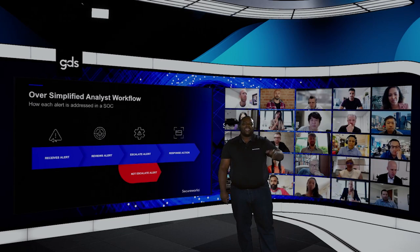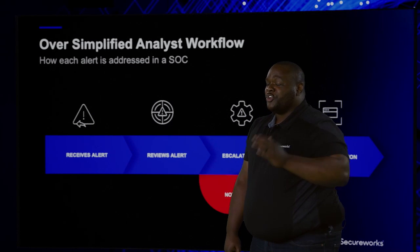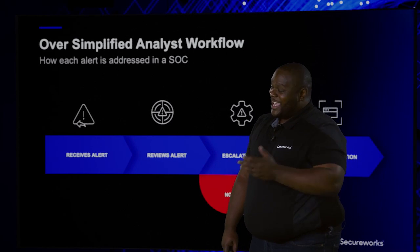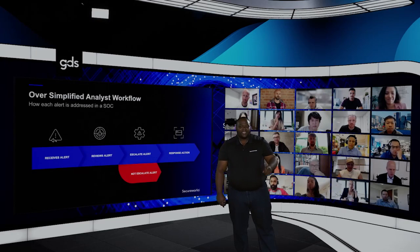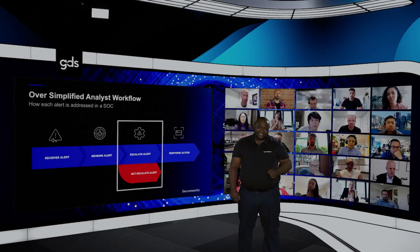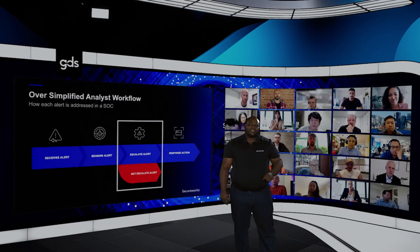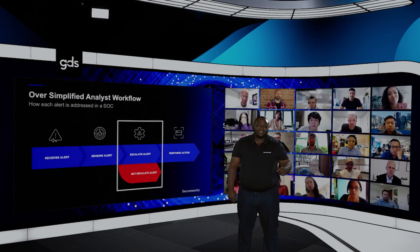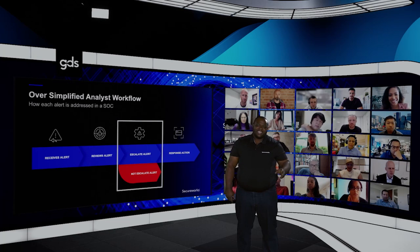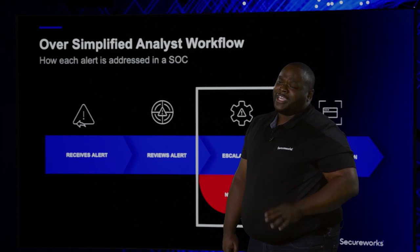Looking at what an analyst has to do day to day: first, they need to get the alert. Then they need to review it to understand the context. Then they need to decide whether to escalate or not escalate. And finally, they need to take action and initiate a response. Getting to that decision-making process is probably one of the most important tasks and where we can actually help using graph-oriented detection mechanisms. The faster an analyst can correlate the massive amount of complex and ambiguous alerts, the faster they can reduce their workload and get to a response.